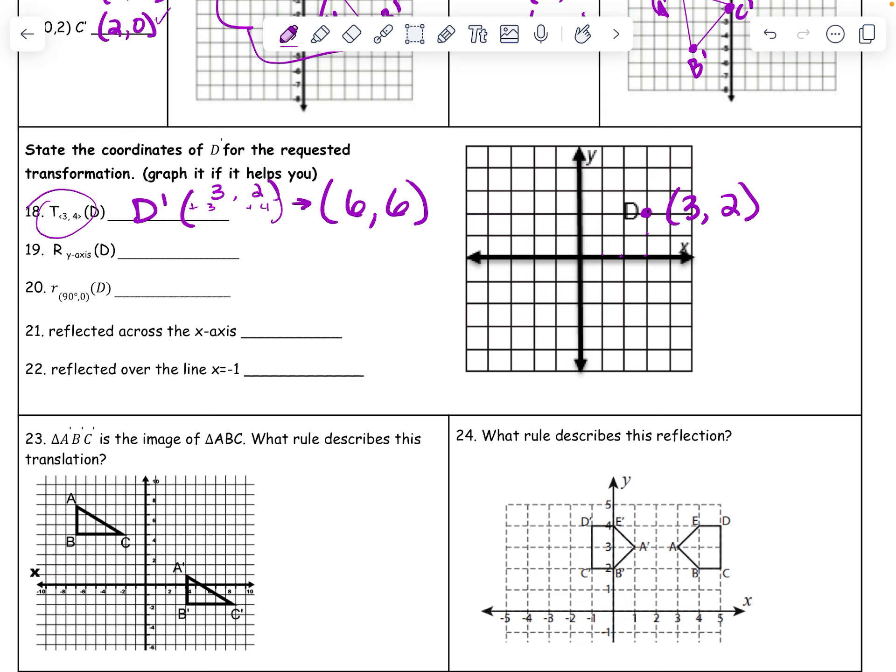Okay, so if I reflect across the y-axis. We've already done one y-axis, but that's okay. We can do another one. Y-axis is just going to be x equals 0. So all you're changing is the x. So x becomes, for D prime, becomes negative 3, positive 2. D prime. Makes sense. Cool, dude.